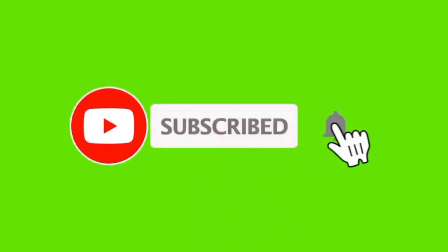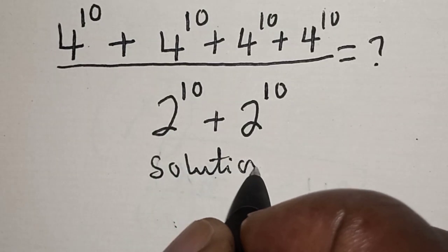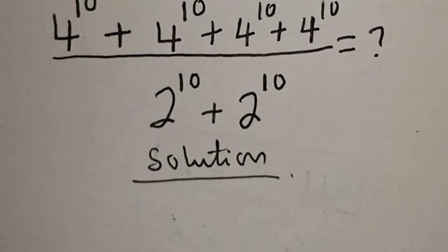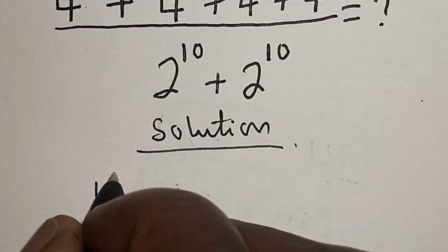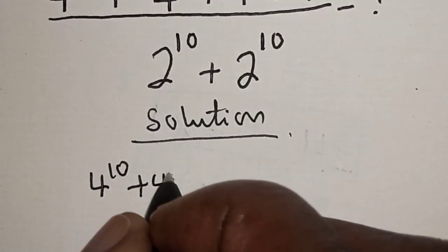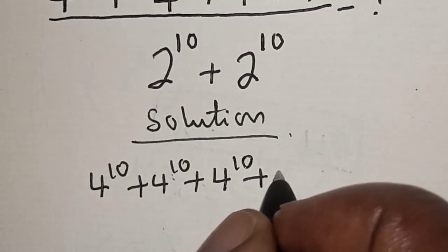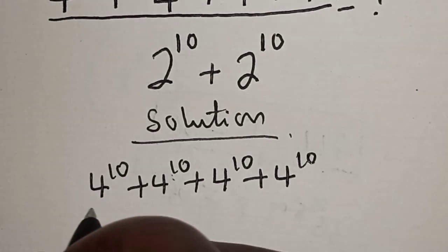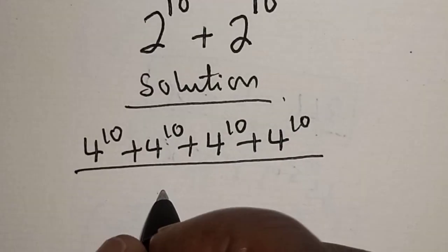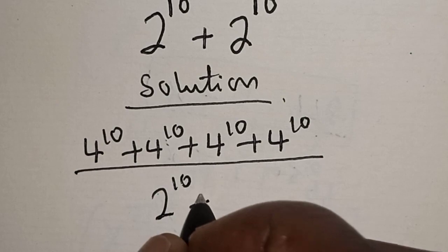Please don't forget to like, share, comment and subscribe. Thank you. Solution: we have 4 raised to power 10 plus 4 raised to power 10 plus 4 raised to power 10, divided by 2 raised to power 10.